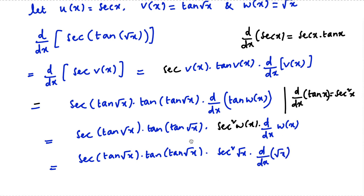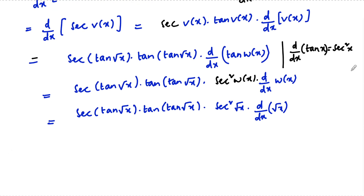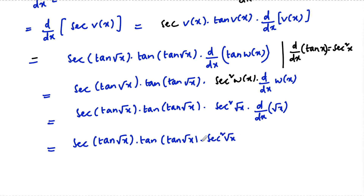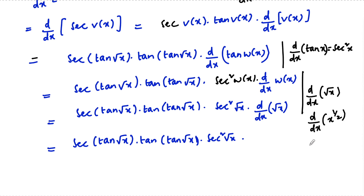The differentiation of root x is 1 by 2 root x. So d/dx of root x = d/dx of x to the power 1/2, which equals 1/2 times x to the power of minus 1/2, that is 1 by 2 root x. So we write 1 by 2 root x here.